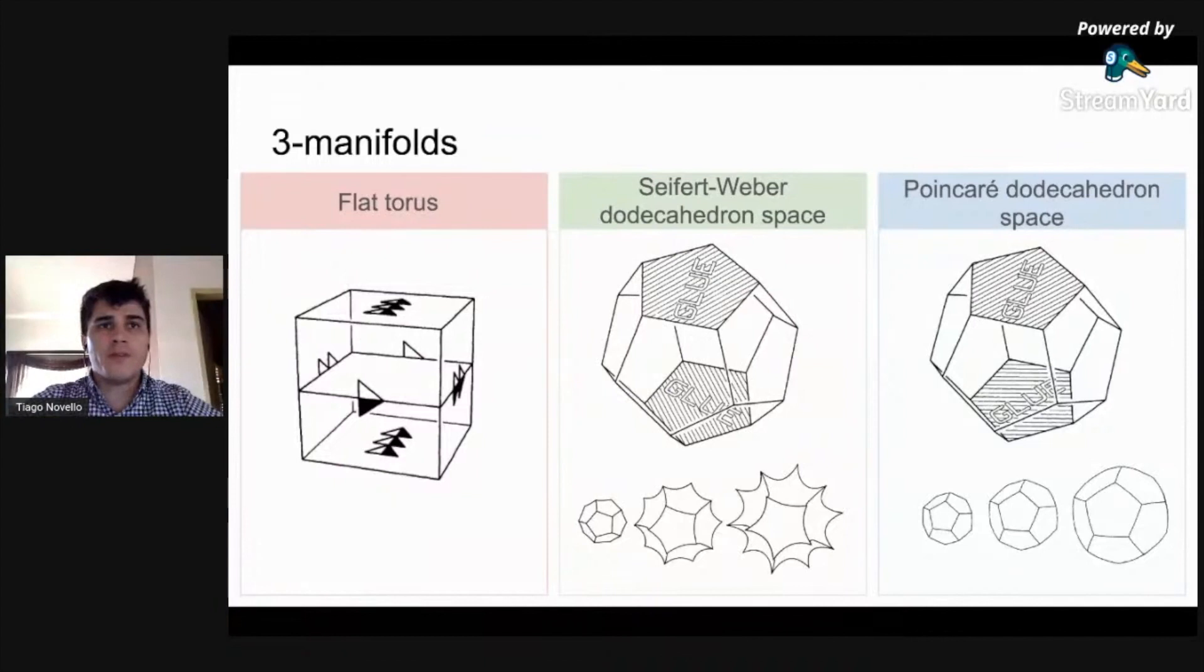For a spherical manifold, we identify the opposite faces of the dodecahedron with a clockwise rotation of π/5. This is the Poincaré dodecahedron space. Again, the face pairing forces many identifications. Thus, the edges are grouped into 10 groups of three edges.